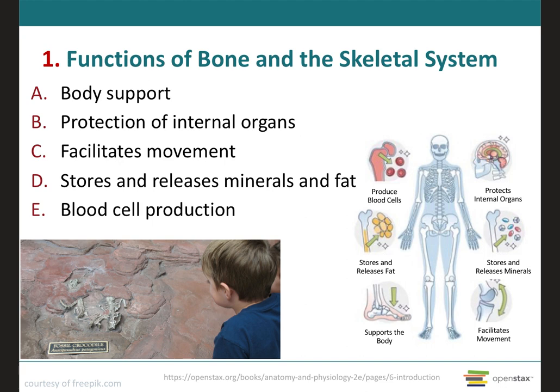A bone is an organ that's made up of several different tissues working together: the bone itself, which is the osseous tissue, the cartilage, the dense connective tissue, the epithelium, the adipose tissue, and the nervous tissue. The entire framework of bones and their cartilages constitutes the skeletal system. The study of bone structure and the treatment of bone disorders is referred to as osteology, where osteo means bone and logi means the study of.